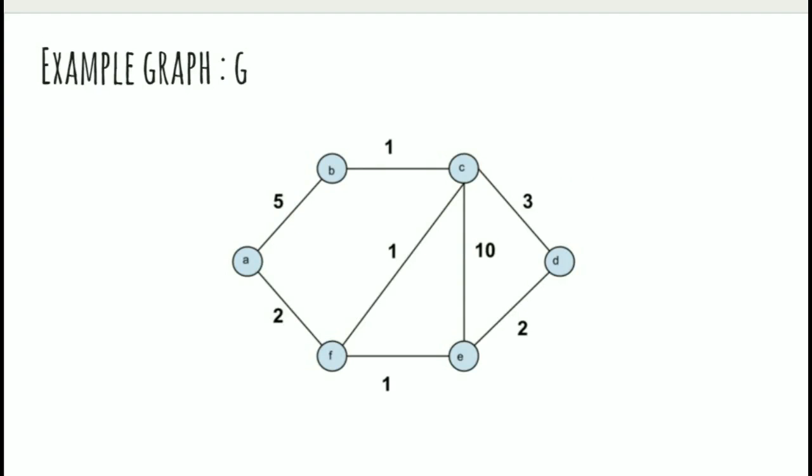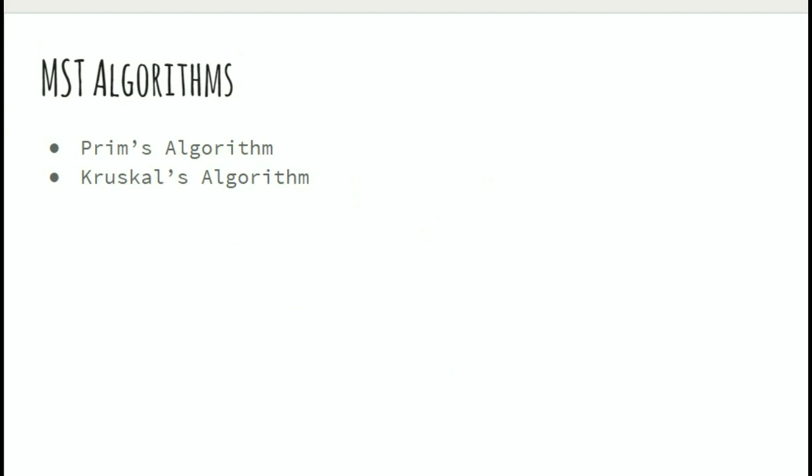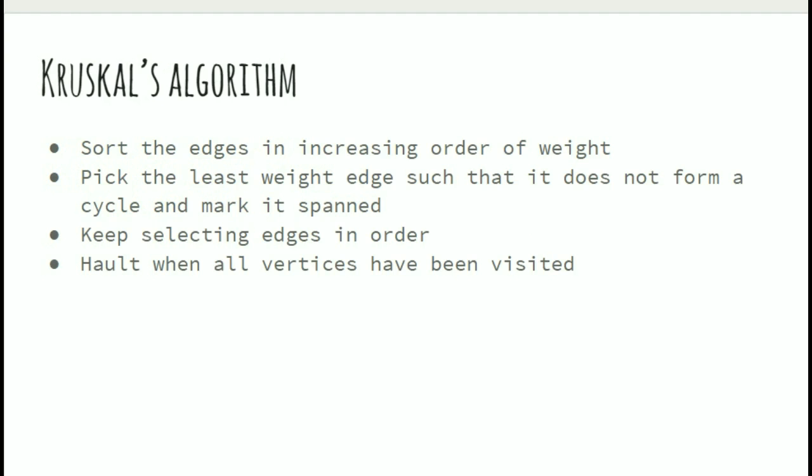Here we have an example graph G. Primarily there are two main algorithms for finding the minimum spanning tree, namely Prim's and Kruskal's algorithms. Let us see how the Kruskal algorithm works. We first sort the edges in increasing order of weight.